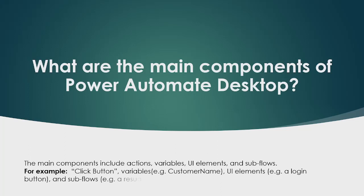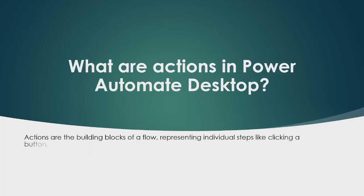The next question is: what are the main components of Power Automate Desktop? The main components include actions, variables, UI elements, and subflows. For example, actions include 'Click Button'; variables can be named 'Customer Name'; UI elements include things like a login button; and subflows represent a reusable login sequence.